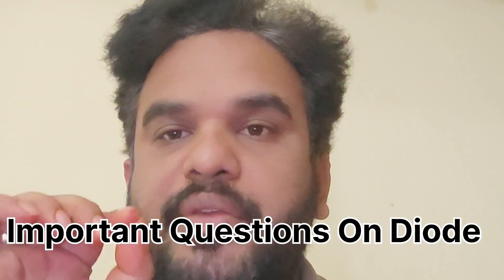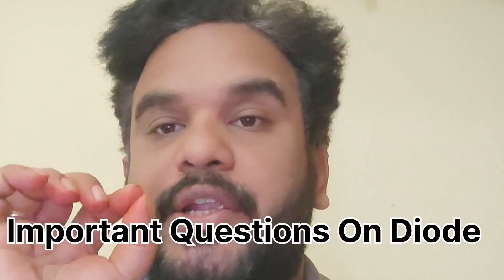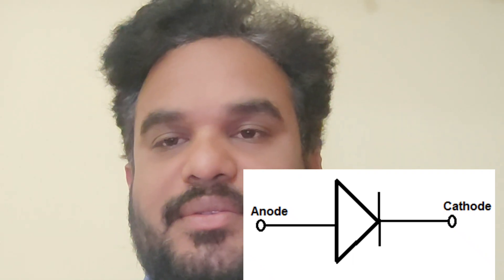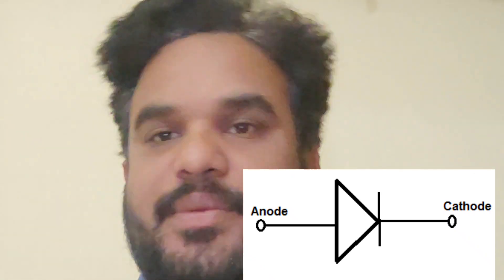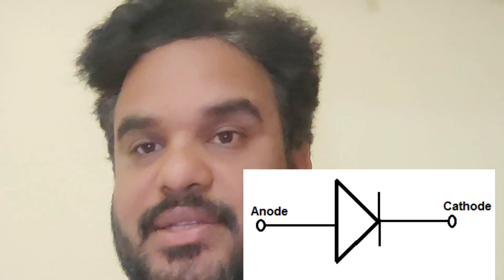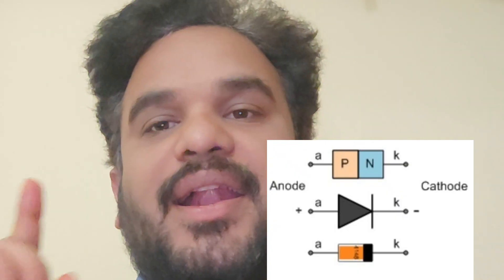A very important question about diode: what is the symbol of diode? This is the symbol of diode — a PN junction. The terminals are anode and cathode. Second question: what are the terminals of a diode? Anode and cathode.